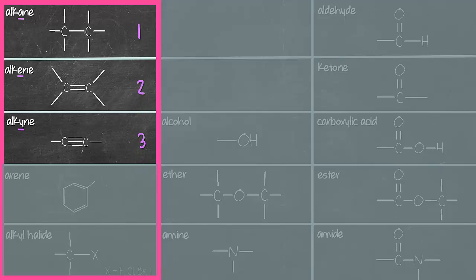So the number of bonds between the C and the C, it's single bond in alkane, double bond in alkene, and triple bond in alkyne. A, E, Y: 1, 2, 3.